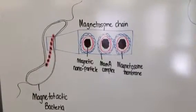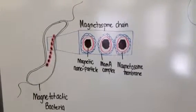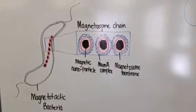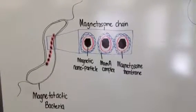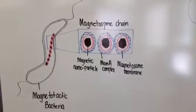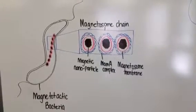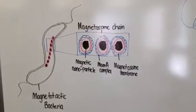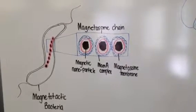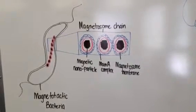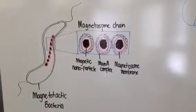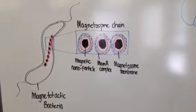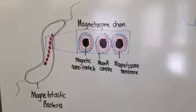Three general crystal morphologies have been seen in magnetotactic bacteria, which include cuboidal, elongated prismatic, and tooth, bullet, or arrowhead shaped. Magnetosome crystals are typically 35 to 120 nanometers long, which makes them single domain.